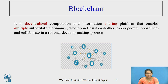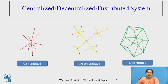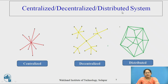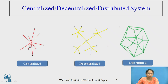What is decentralized? Let us look at this slide. There are three types of systems or communication: centralized, decentralized, and distributed. Centralized, as the name suggests, has a single point of authority — just like a client-server architecture, where multiple clients are connected to a single server. The server takes the decision and all the data is stored on the server.